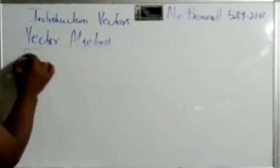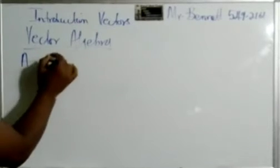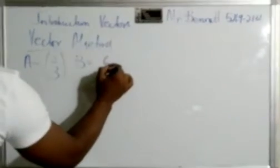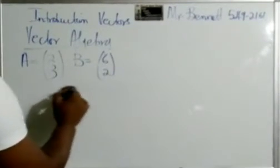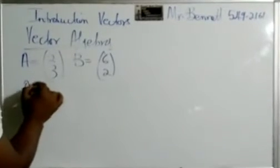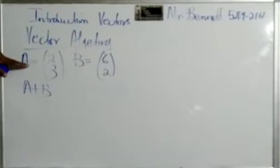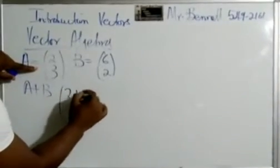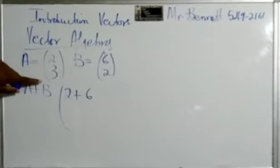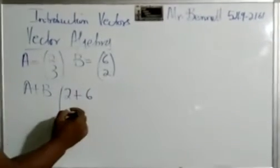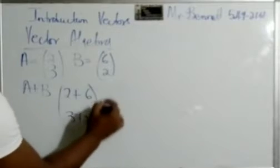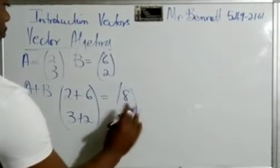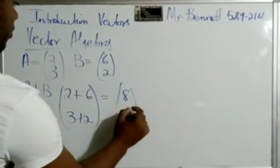All right, vector algebra. Let us see. We have vector A equals (2, 3) and vector B equals (6, 2). And we want to find A plus B. So what we do, we add the x coordinates. So it will be 2 plus 6. And we add the y coordinates separately. So it will be 3 plus 2. So therefore, it will be (8, 5). 3 plus 2 is 5.